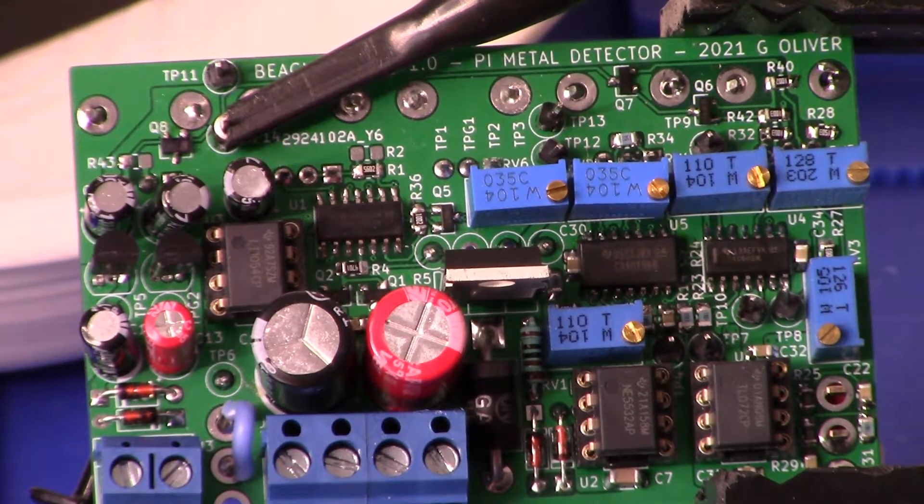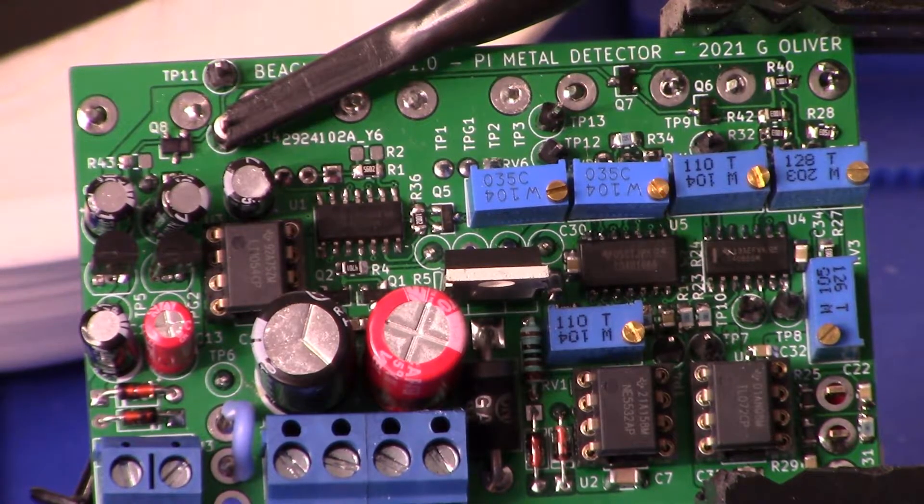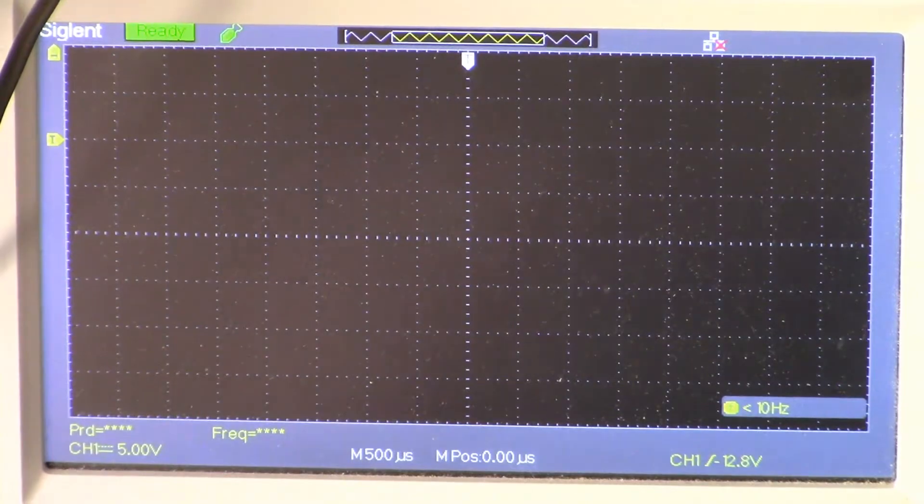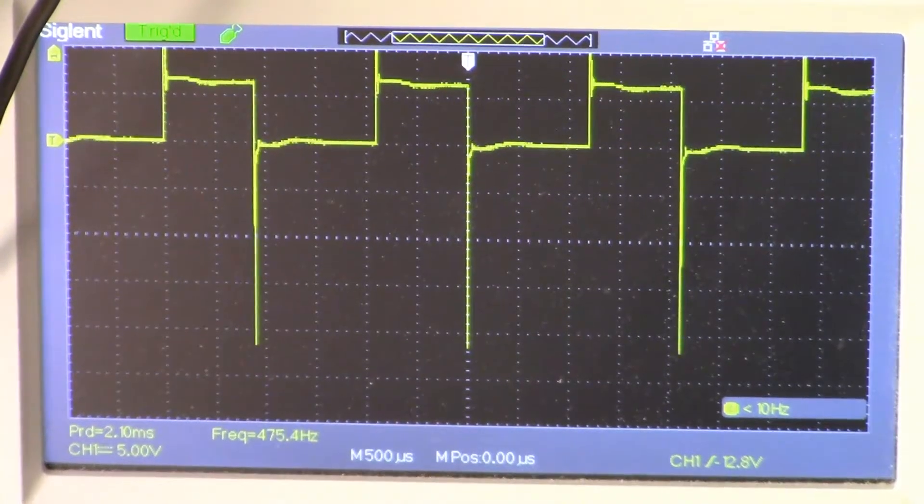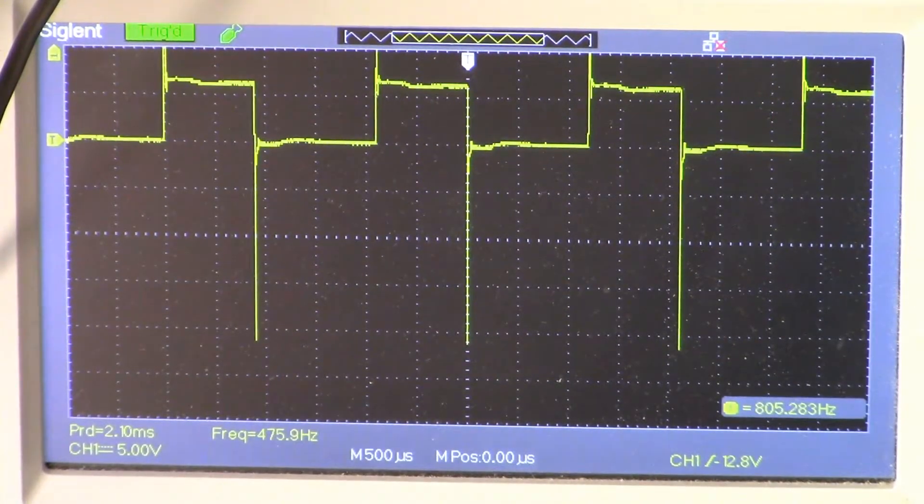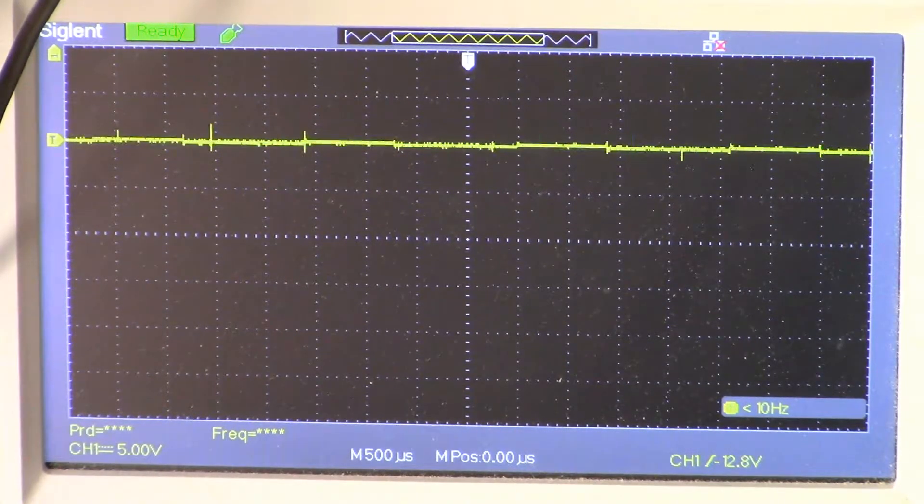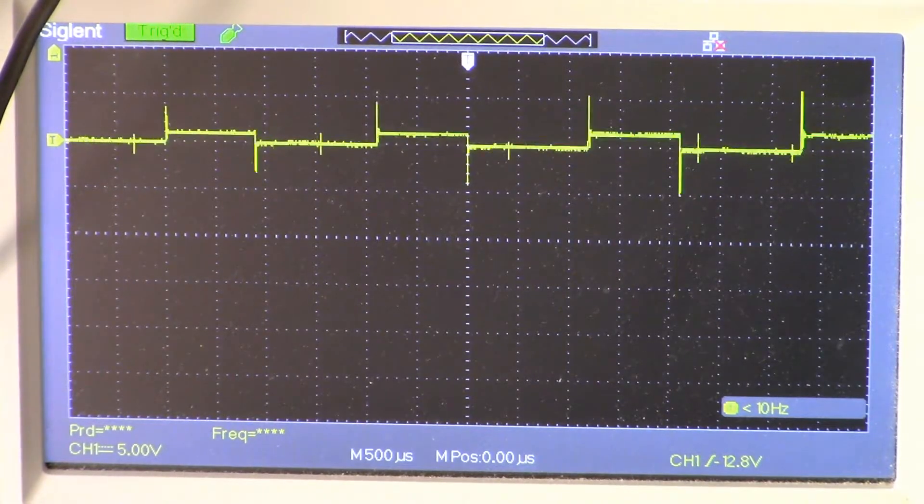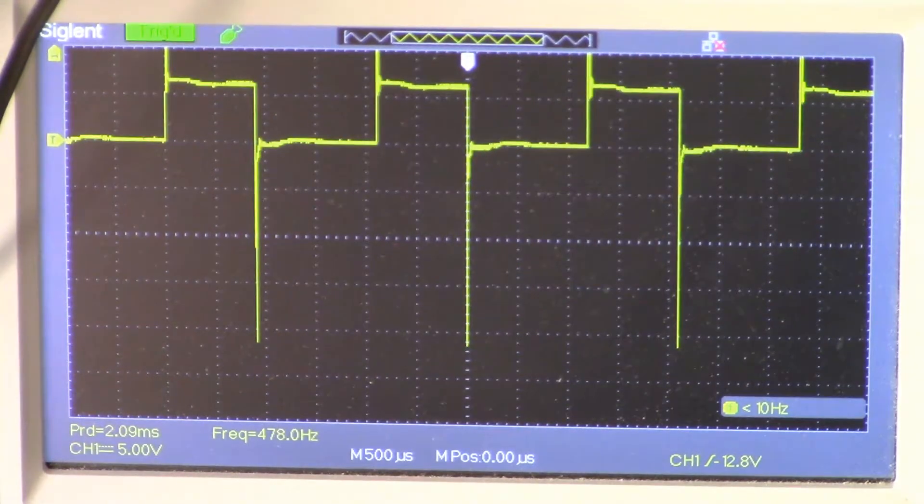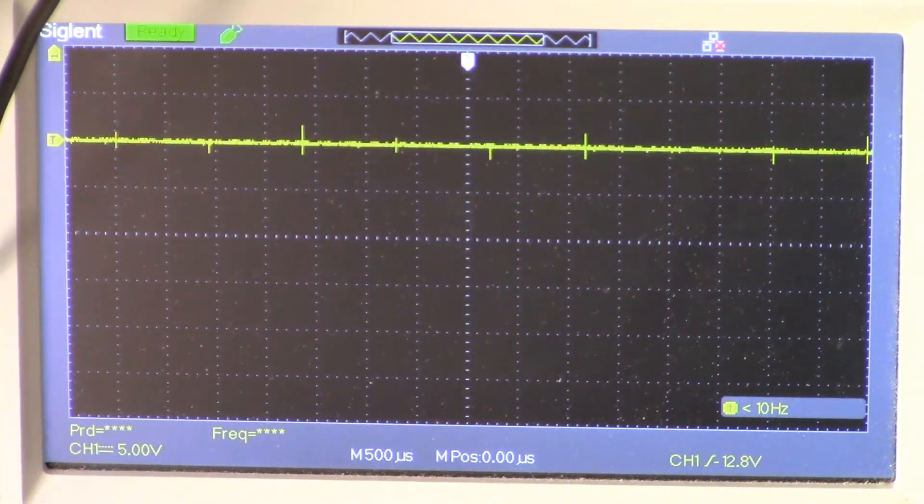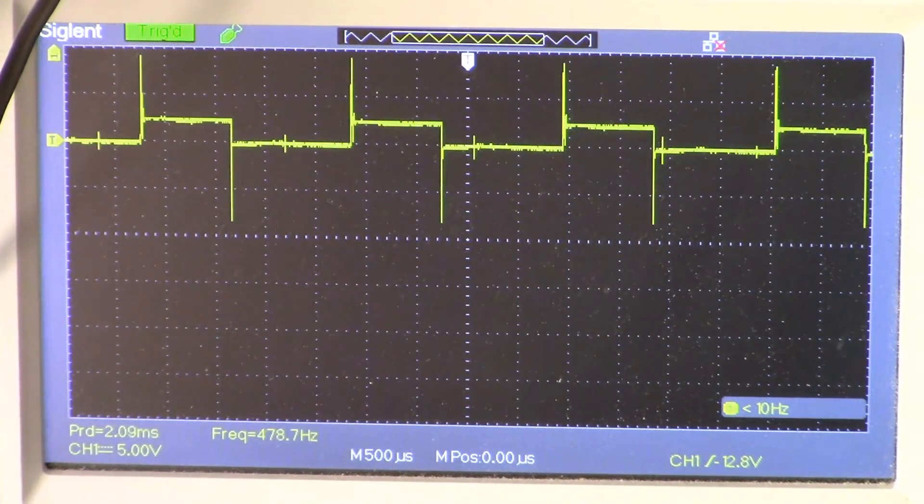Let's take a look at the oscilloscope and hear the speaker as we present targets. All right, let's go ahead and power the detector up. All right, move my coil away from metal and here comes the coin.